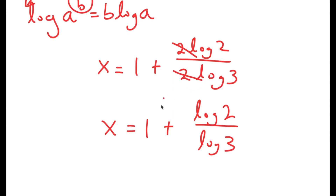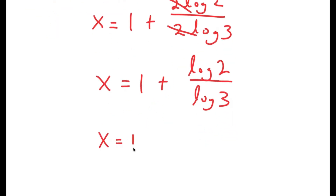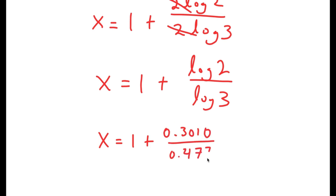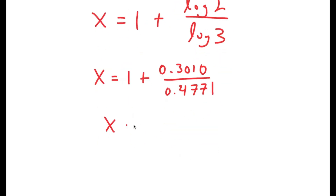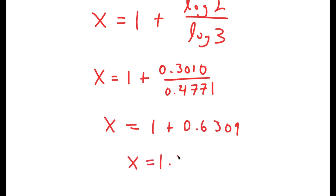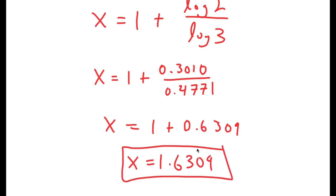Now, log 2 is equal to 0.3010, and log 3 is equal to 0.4771. So if I divide these two, I get x equals 1 plus 0.6309, meaning x is equal to 1.6309. So this is my answer.